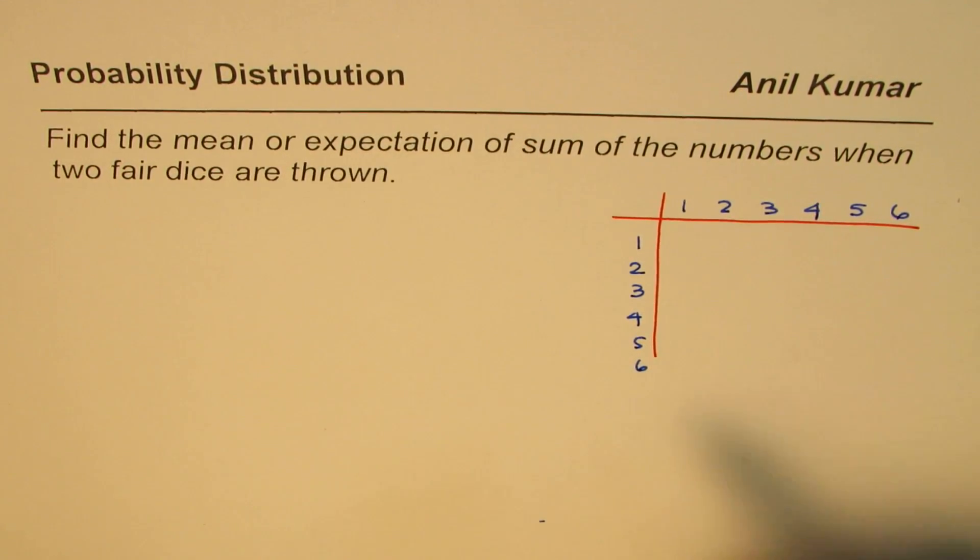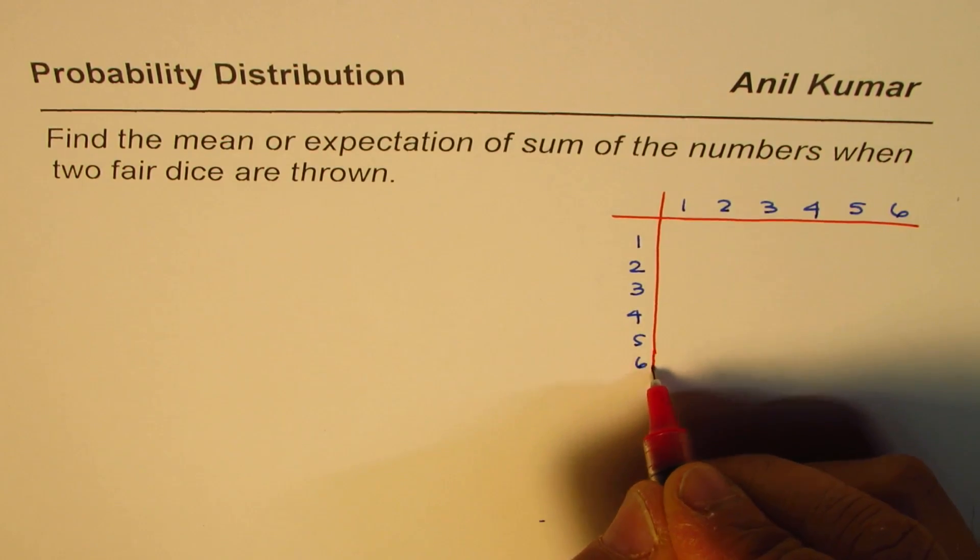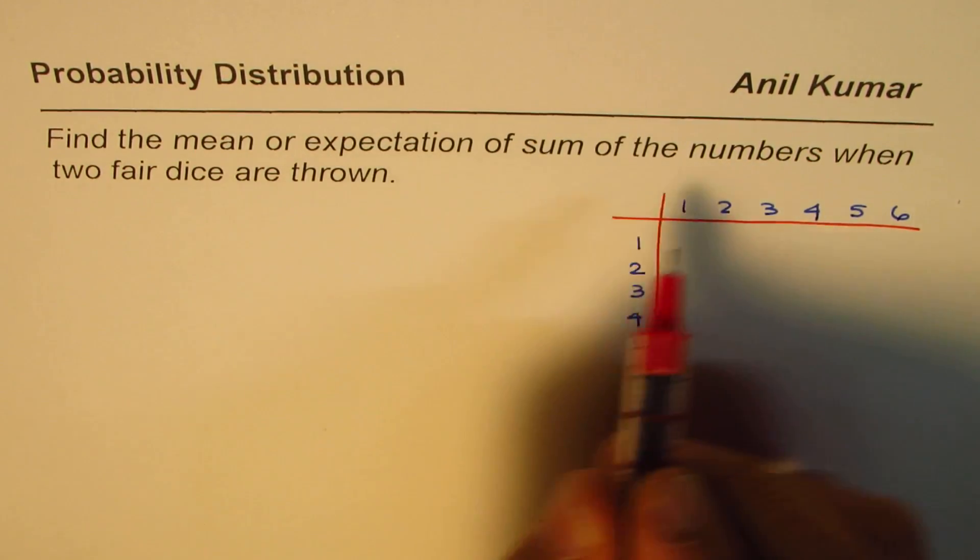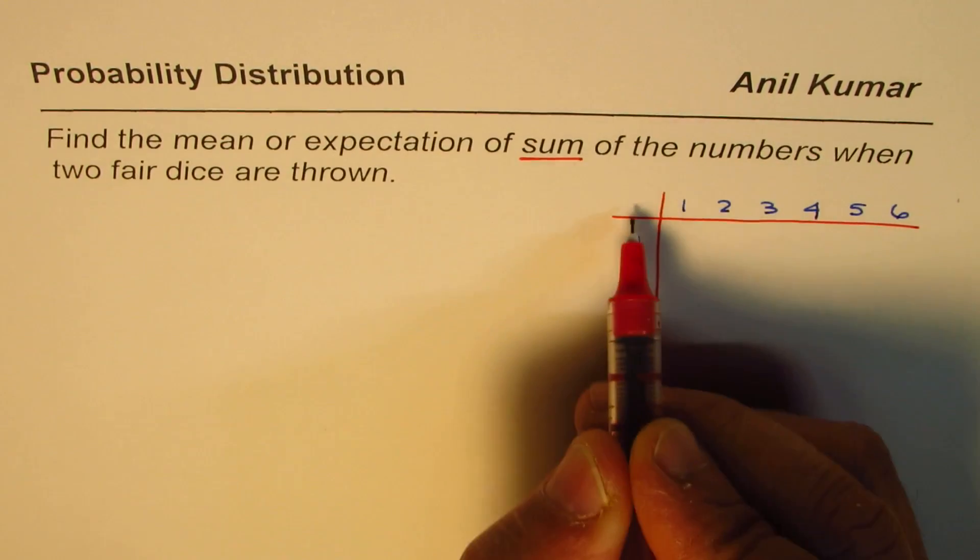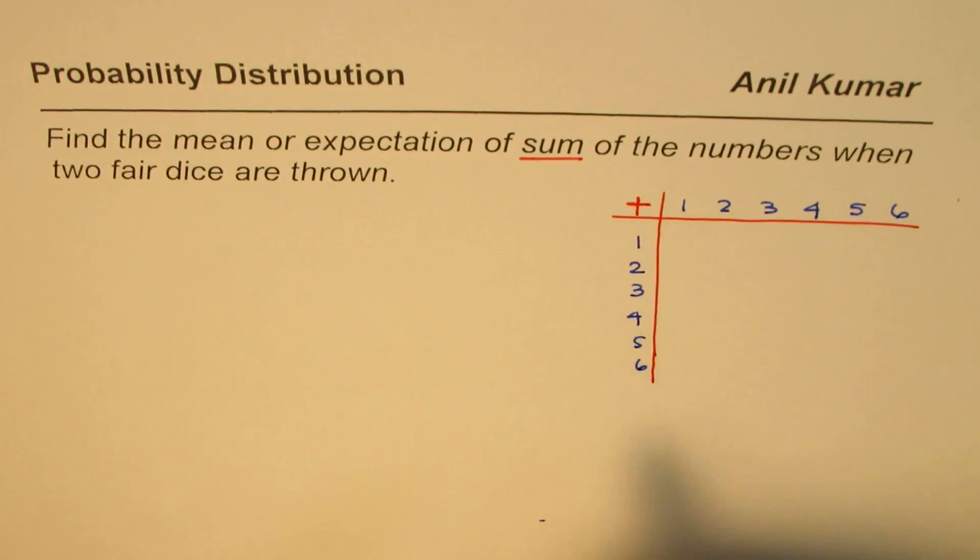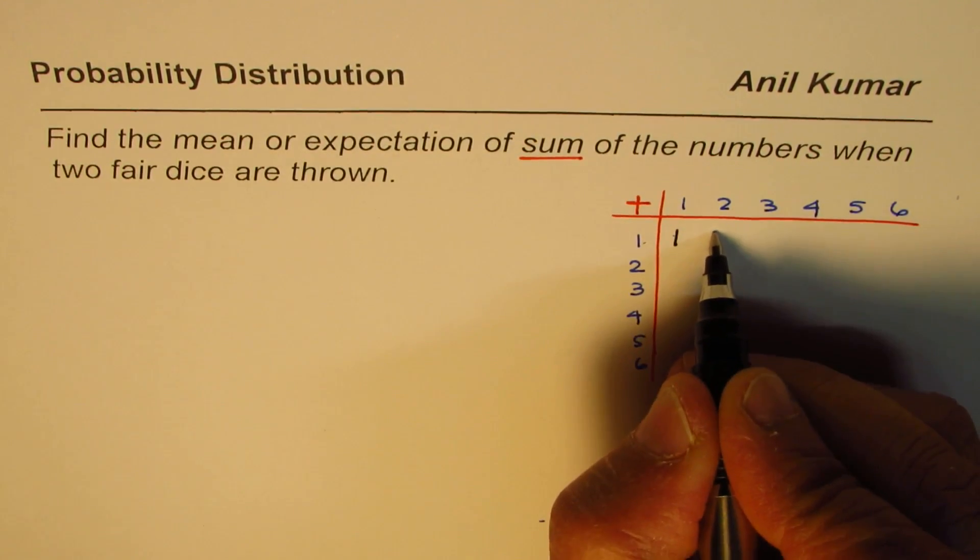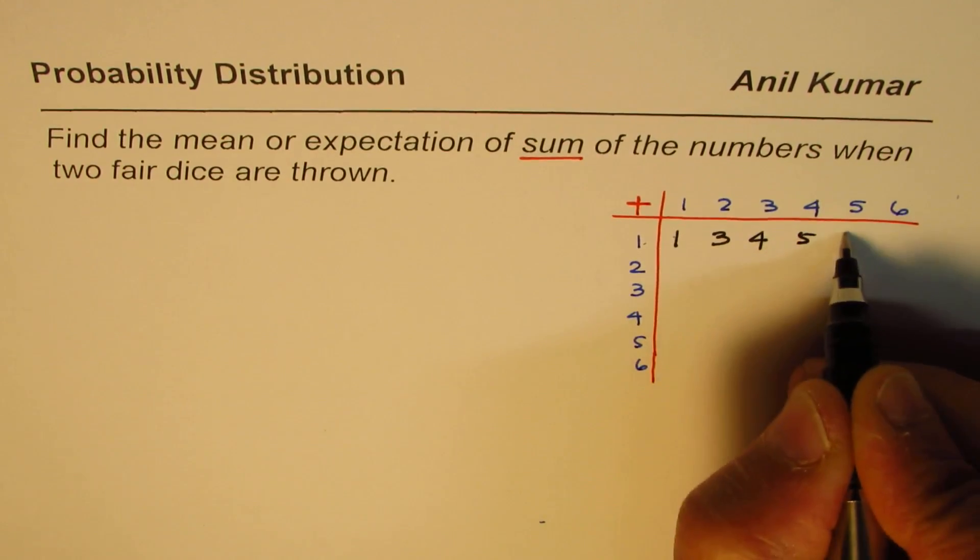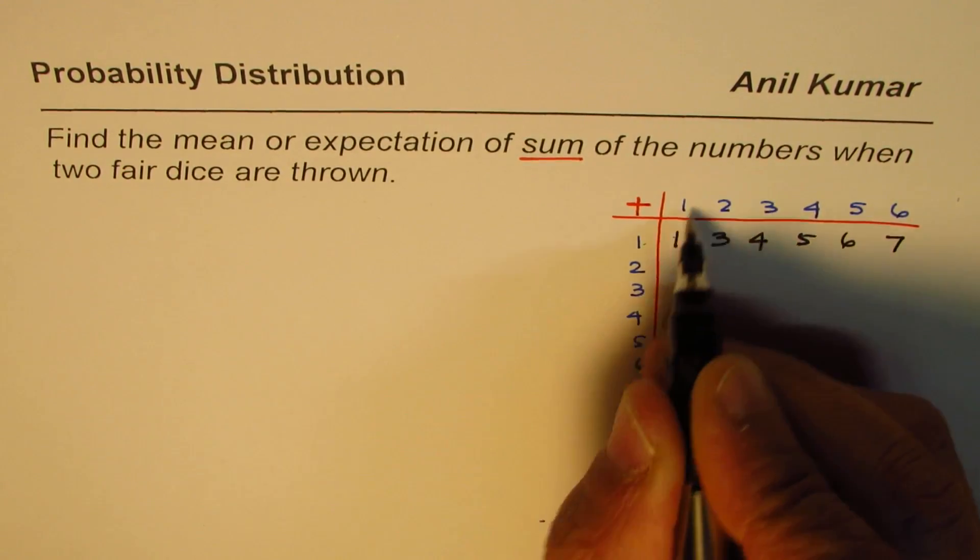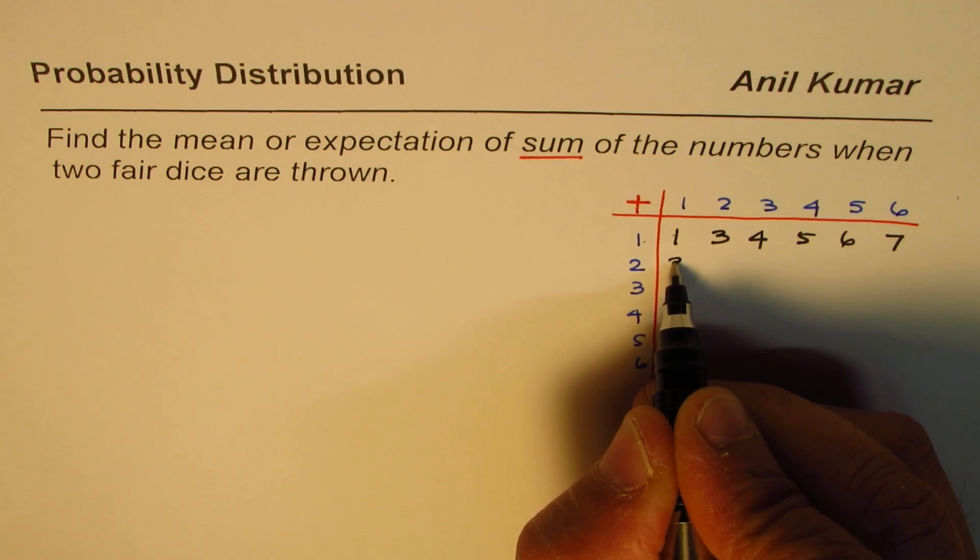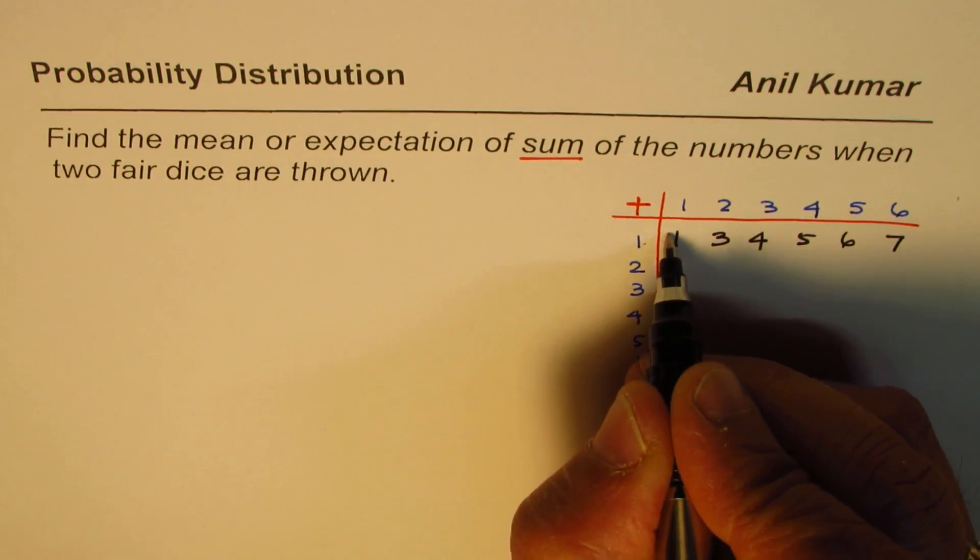We are considering these to be fair dice, and sum of numbers means we'll add them up. When you add these numbers, what do you get? Let's write: 1 plus 1 is 2, 1 plus 2 is 3, then we get 4, 5, 6, 7. For 2 plus 1... I'm sorry, this should be 2.